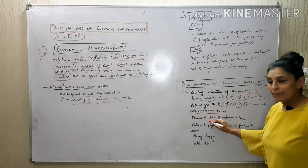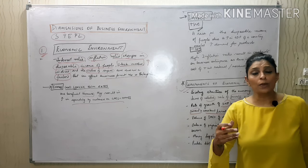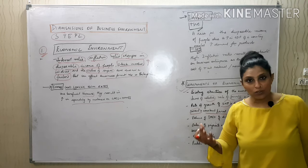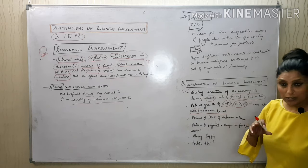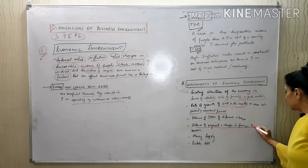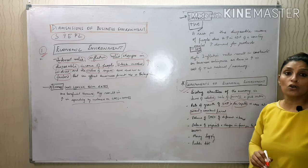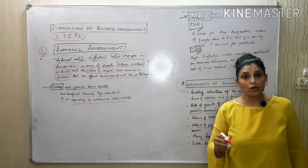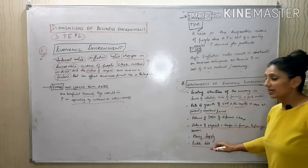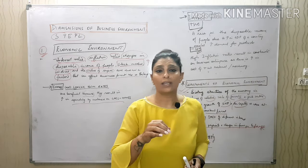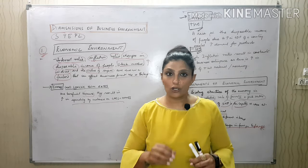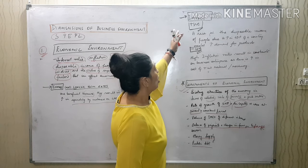Volume of import and export of different items — we look at both balance of trade and balance of payments. There are changes in foreign exchange rates in terms of dollars, pounds, and euros. Then money supply, and lastly public debt — these all affect our economy. So it is very important for us to know the proper economic environment.